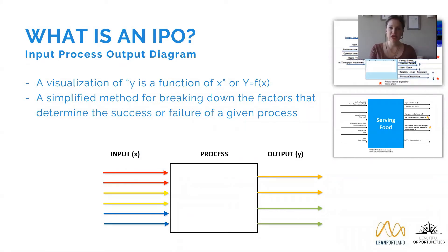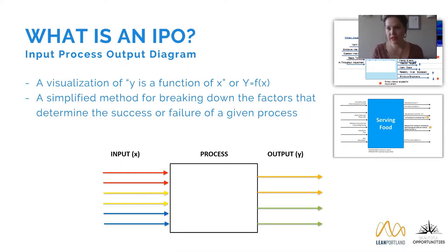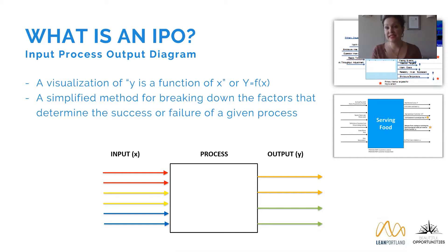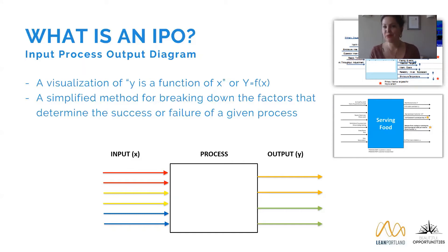What is an IPO? An IPO is simply a visualization of Y is a function of X — you are what you eat, you get what you put in. It's a simplified method for us to break down all the factors that will determine the success or failure of a given process. In this IPO diagram, you can see arrows going in that are red, yellow, and blue, but the arrows coming out are orange and green — because all of these inputs have interacted to give us some kind of result or output.